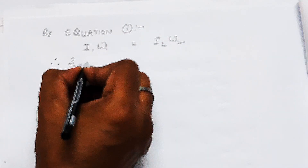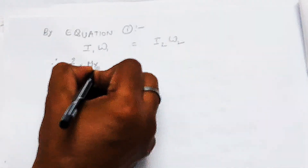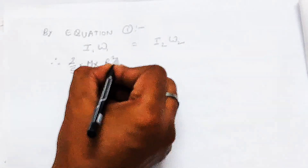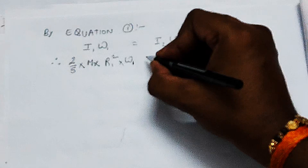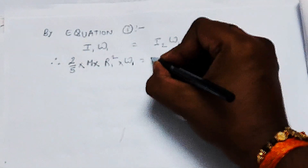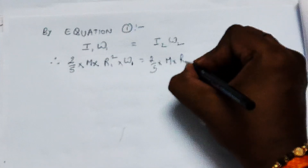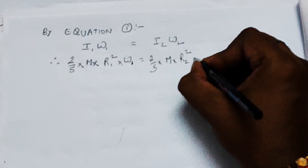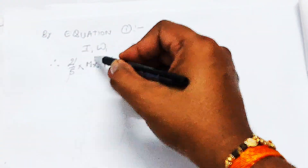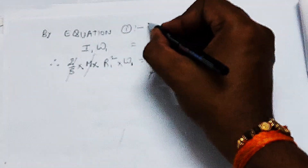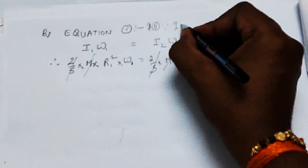Putting the value of I1 as 2/5 MR1² and I2 as 2/5 MR2² — these are the moments of inertia of the earth with R1 and R2 as the radius before and after contraction respectively. The 2/5 M term cancels from both LHS and RHS as it is common to both sides.